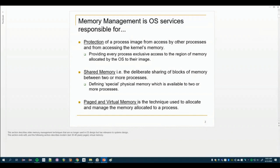The last few slides in this section will cover techniques for sharing memory between multiple processes. If we want to share information between two processes, or between the kernel and a process, the fastest possible mechanism for exchanging information is shared memory. We'll also finish up talking about paged memory, and then in the next section we'll cover virtual memory, which is entirely relevant to today's operating systems.